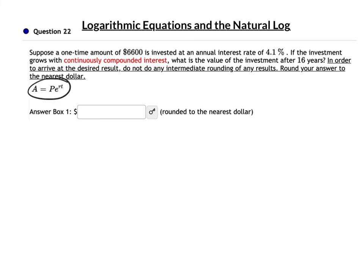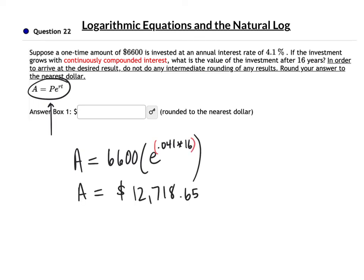Here's a quick one using the PERT formula for continuous growth. The amount equals what we start with — $6,600 — times e to the rt. r is 0.041 for 4.1%, times 16 years. Be careful with parentheses in the calculator. I got $12,718.65.